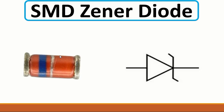Next we have the SMT Zener diode. This is a diode but not a normal diode — it is a Zener diode. Here we have the symbol: the cathode is the negative terminal and the anode is the positive terminal. To check this Zener diode using a multimeter, put the black probe on the cathode and the positive probe on the anode; you should get a forward voltage drop reading of about 400–700mV. If you swap the probes, you should get no reading — that means the diode is good. If you get a very low resistance or a buzzer, the diode is shorted. This diode is used to stabilize the voltage in the circuit.